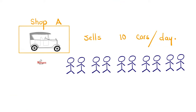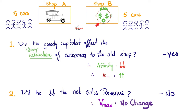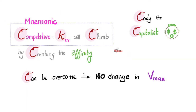Let's understand competitive inhibitors — Cody the capitalist. Imagine a store that sells 10 cars per day to 10 different customers. Then the competitive inhibitor, Cody the capitalist, opens shop in front of the first one. The attraction of customers to the old shop decreases, so affinity decreases and KM will go up. But since Cody did not alter the total number of units sold, VMAX stays the same. So with competitive inhibitors: KM climbs by crushing the affinity, you can overcome it, and there is no change in VMAX.